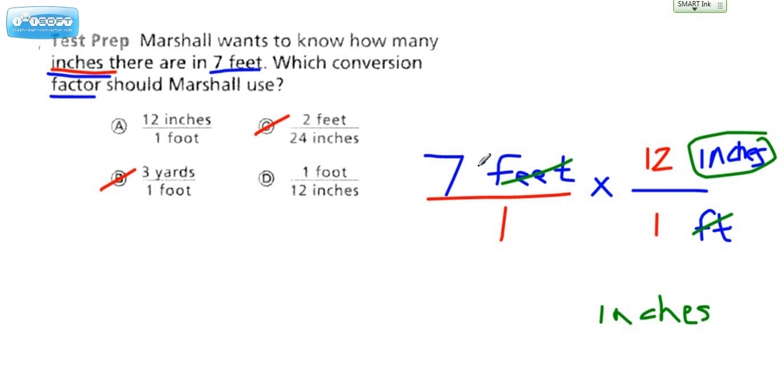If they actually wanted us to come up with the number of inches, then we would multiply 7 times 12 and get 84. But that's not what they wanted. They wanted you to choose which conversion factor. Now if you take a look at which one we have written here, that matches choice A and not choice D. Therefore you would pick that.